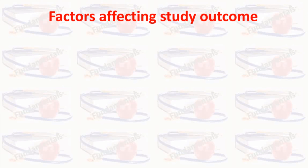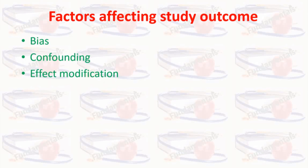Observational studies are more susceptible to the effect of chance, bias, and confounding, so appropriate steps must be taken at both the design and analysis phases so their effect would be minimized. Due to the effect of these factors, study results cannot be generalized, so it is necessary to take measures to prevent these factors.